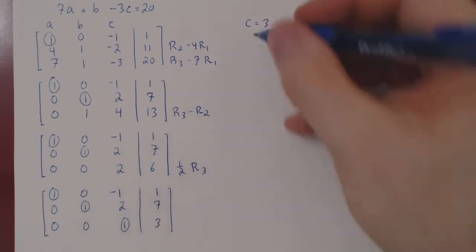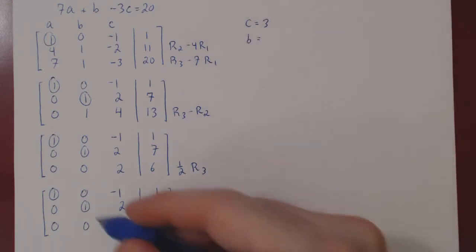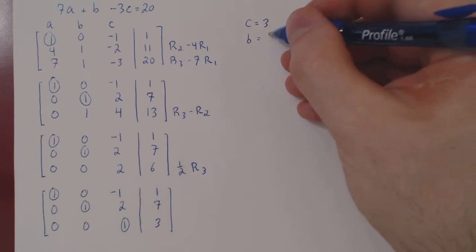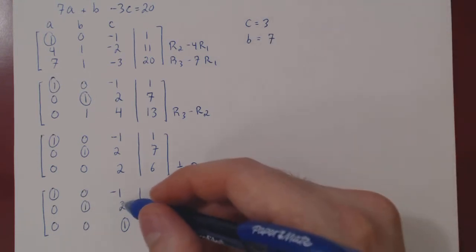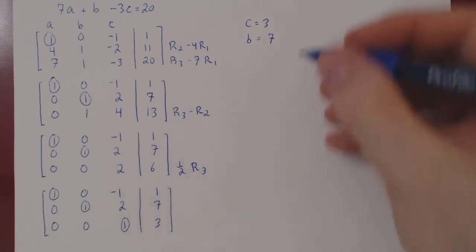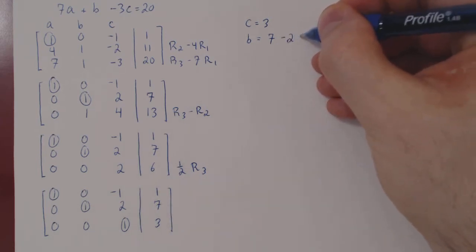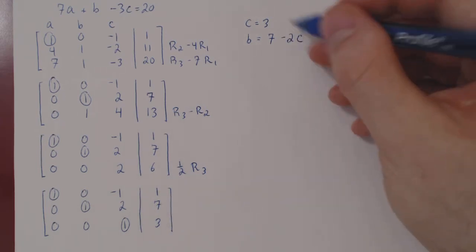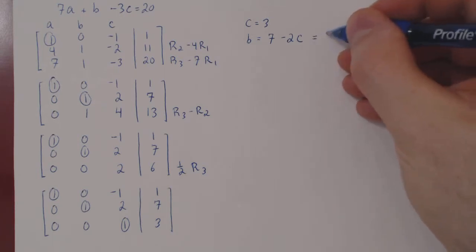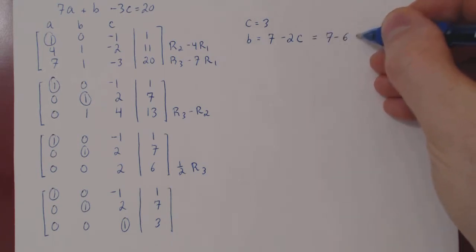Then we'll solve for b. So b equals 7. There's a positive 2c on the left. Sent to the right becomes a negative 2c. But we know that c is 3, so we get 7 minus 6, which is quite simply 1.